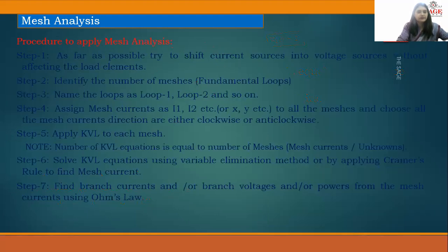So again as far as possibly try to shift the current source into voltage source without affecting the load element. And second is identify number of meshes, so that is the very basic thing. So we have seen that there were three meshes present then we have to assign mesh currents to that corresponding branch and how we will give the current name because there is a voltage source so from positive terminal of the voltage source current will start flowing and whenever it is entering it will be plus and for leaving we will use negative sign.